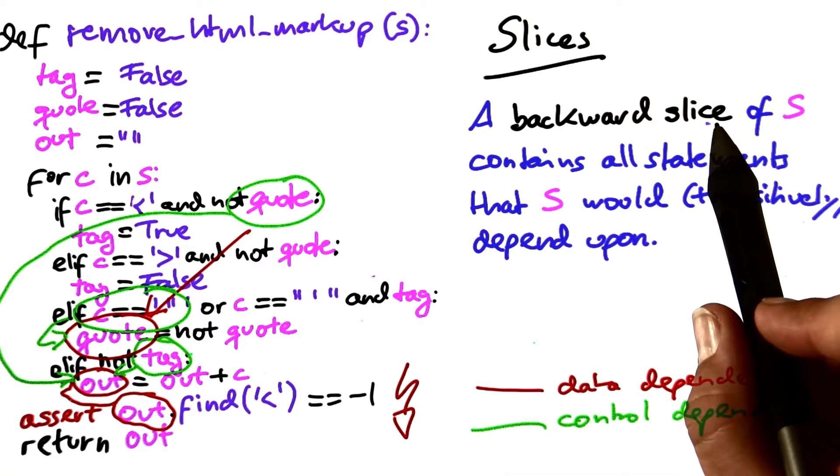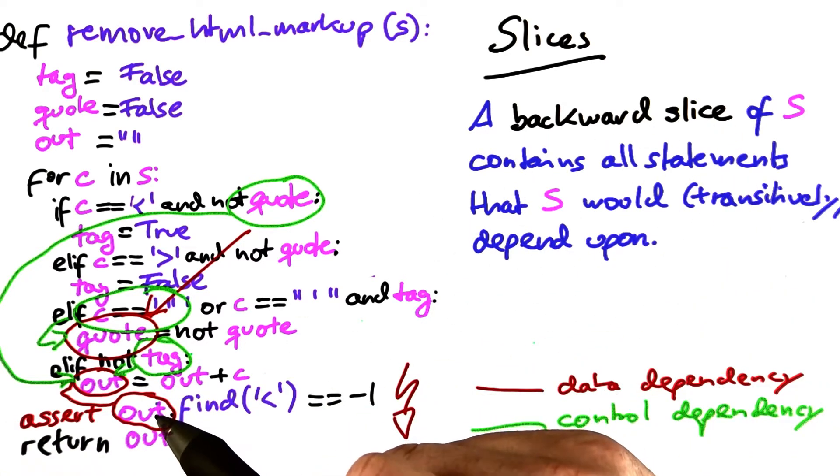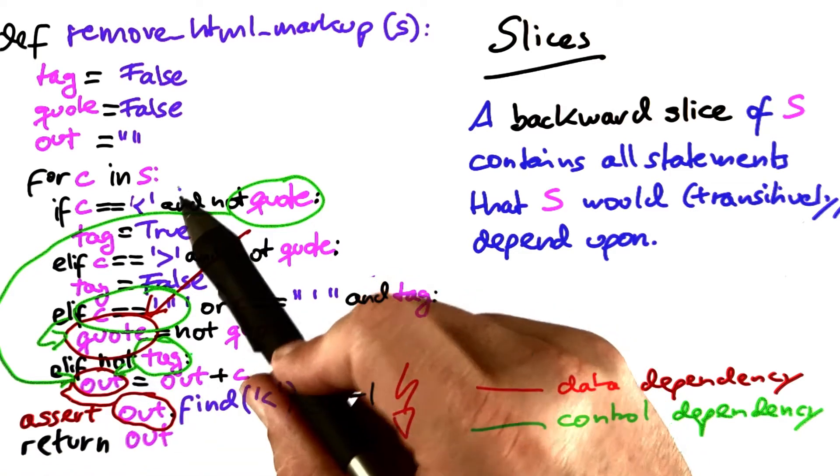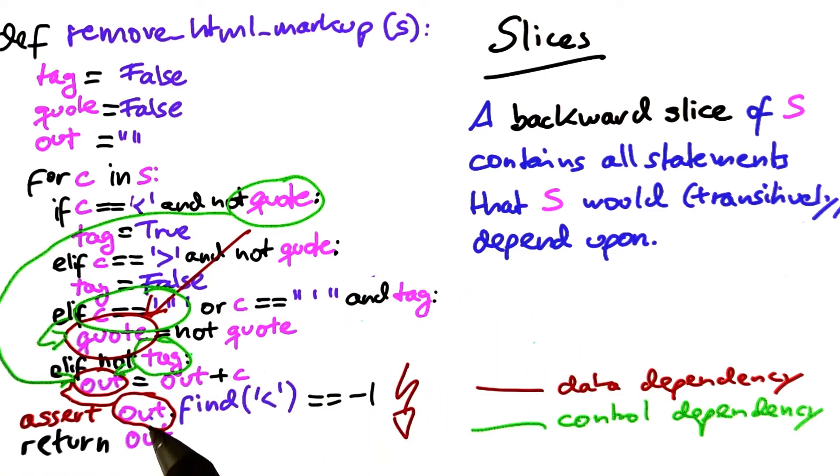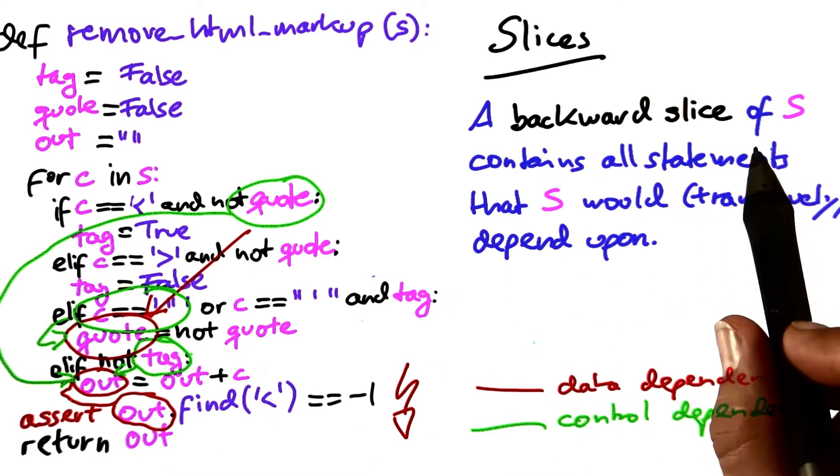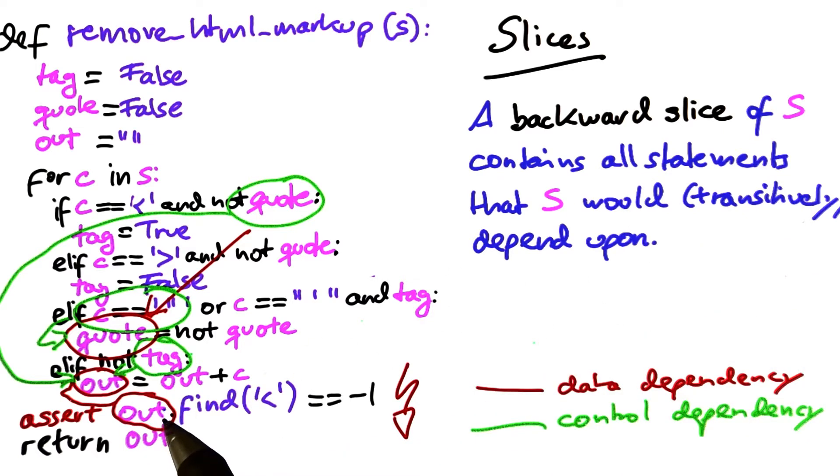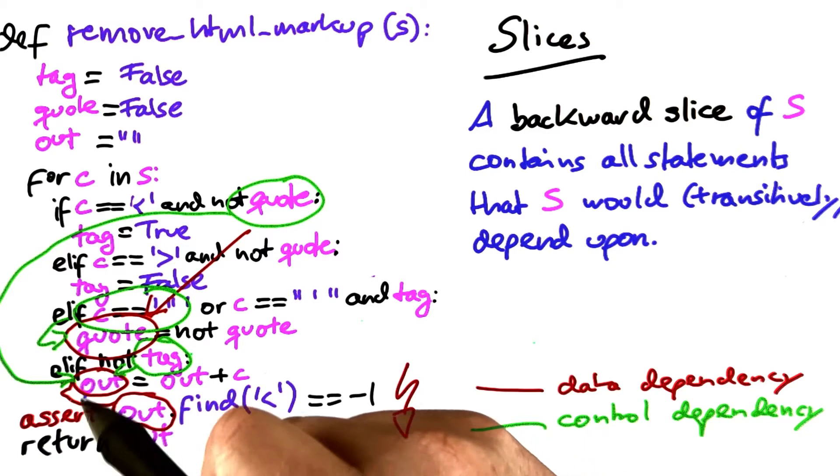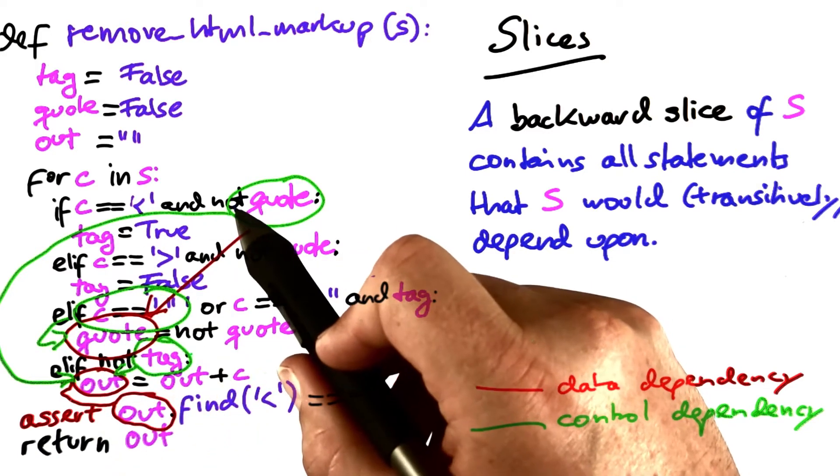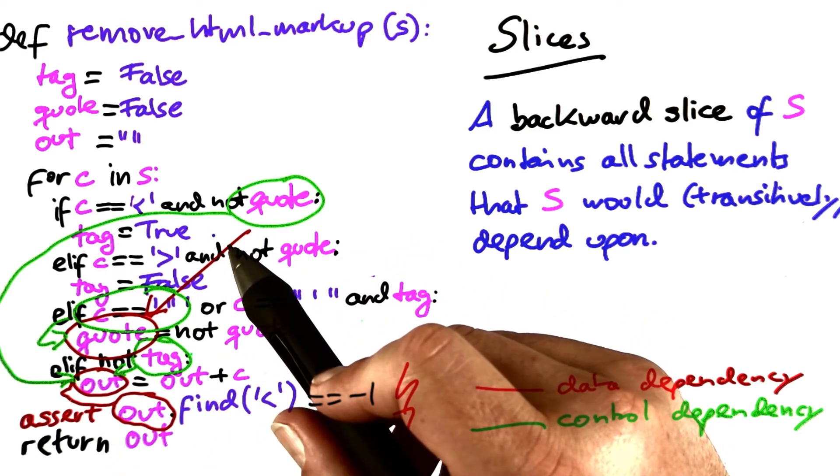A so-called backward slice, starting from a statement, contains all the statements that the statement s in question would transitively depend upon. You obtain a backward slice by starting with the statement s and then following all the dependencies until you've reached a fixed point.